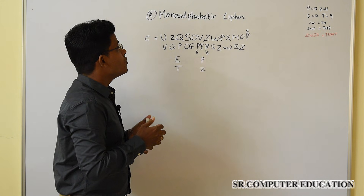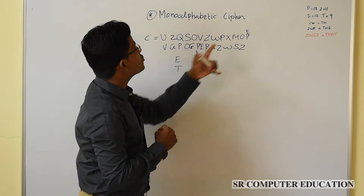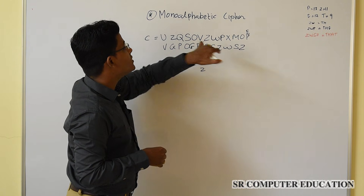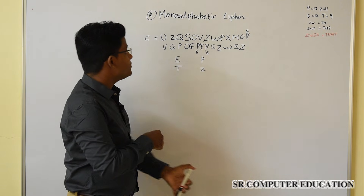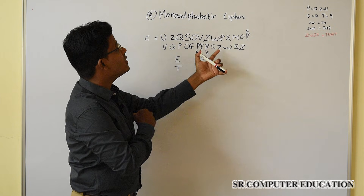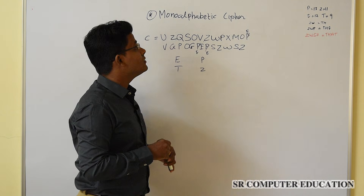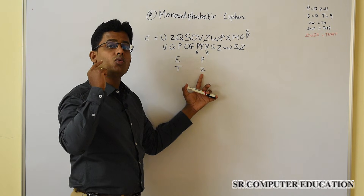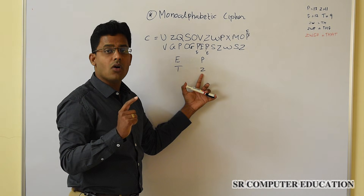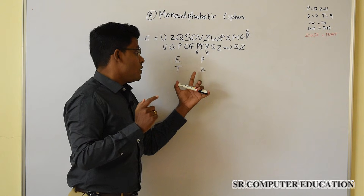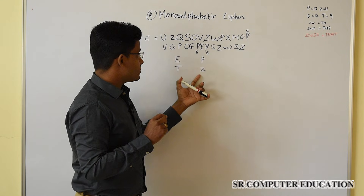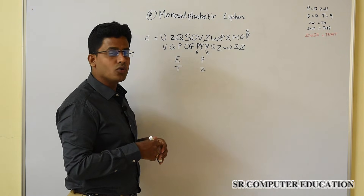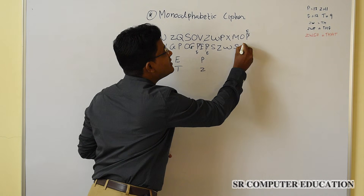Now you have to find the second most common letter used in your cipher text. When you go through the cipher text, you will find that the second most common letter is Z. According to our English language knowledge, the most common letter after E is T. So what you have to do is substitute every Z with T.